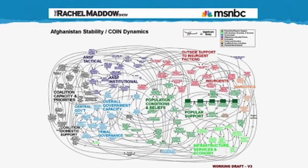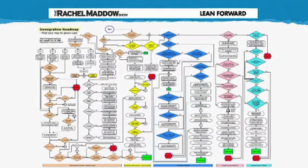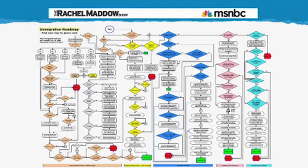Pro-immigration reform groups have used this same scare chart tactic. This shows a map of the current legal path to immigration in this country — this is how you legally become a U.S. citizen if you're not one already. And all of the little red stop signs that you see are all of the places in the process where you can get blocked from becoming a U.S. citizen through our legal immigration process.